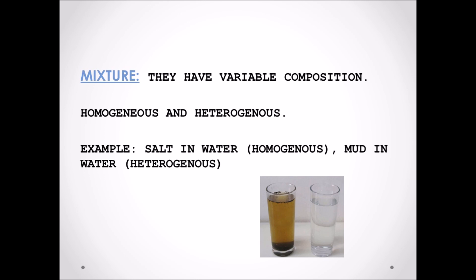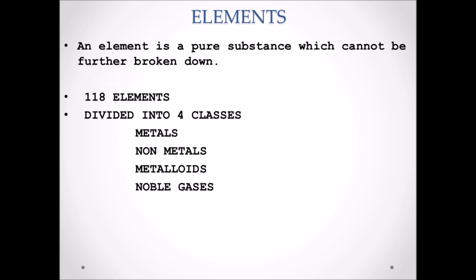Elements are pure substance and cannot be made smaller or broken into smaller parts. Many elements are already identified till date, as much as 118 elements are identified, in which some of the elements are made by scientists and the rest of the elements are found naturally. They can be subdivided into four classes: metals, non-metals, metalloids, and noble gases.